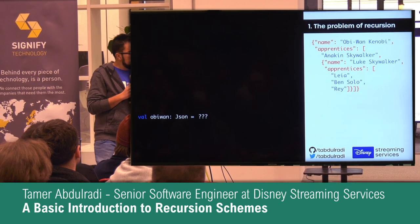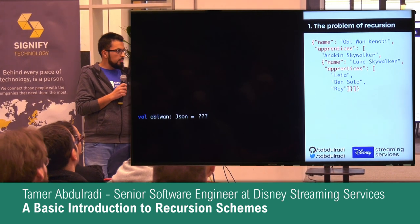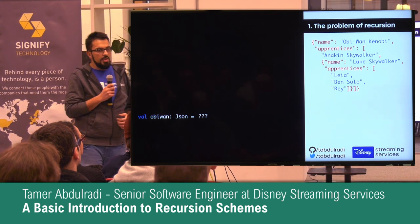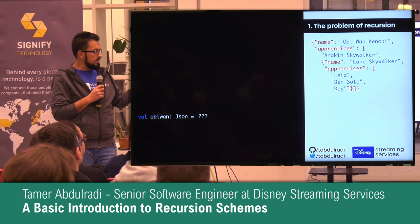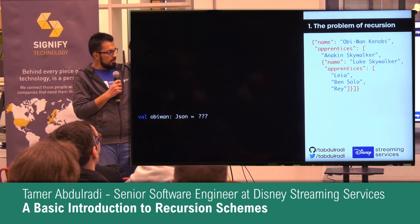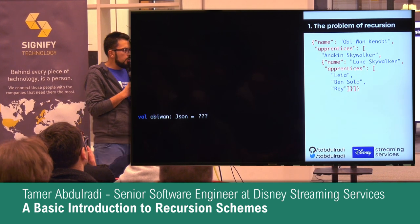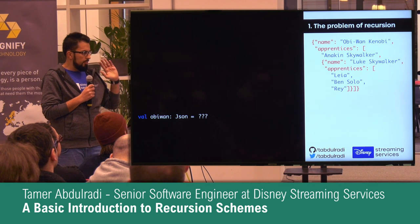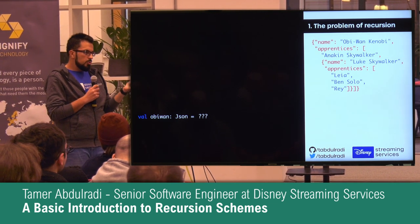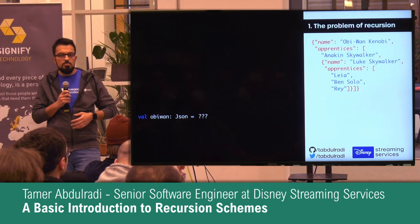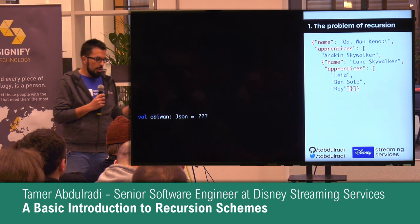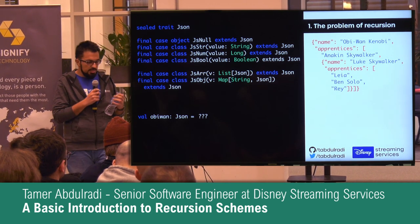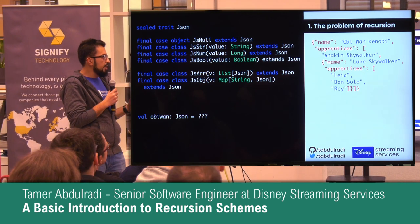So we're going to talk about JSON. We have this JSON object on the left-hand side. First we will represent this data in memory — we're going to write our own classes that represent what JSON is. Then we will try to write a function that serializes this tree or JSON structure from memory to a string representation similar to the one on the slide.